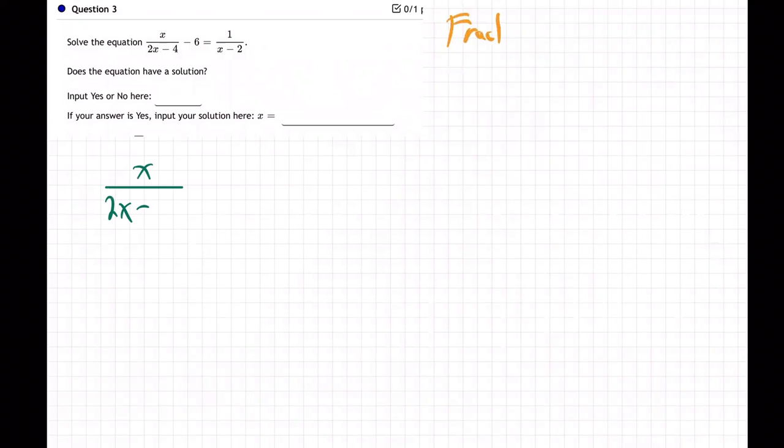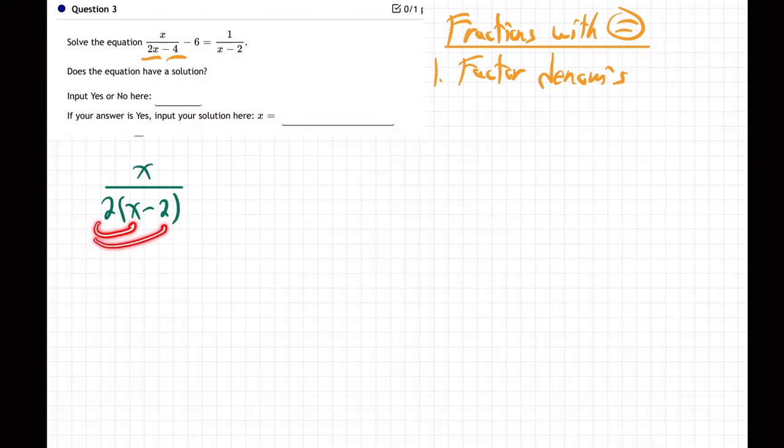So fractions, we have fractions with an equal sign. What are we supposed to do with this? Step number one is to factor any denominators. We've got to find a common denominator. So right here, 2x minus 4, that can actually be factored. Take out a 2, right? See how 2 times x and 2 times 2 would go back to 2x minus 4?